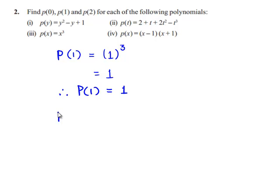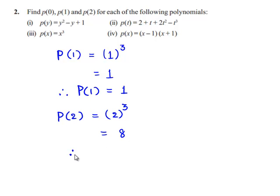Next, p of 2 is formed by substituting the value of 2 in the place of x. Therefore, p of 2 is equal to 2 cube. We know that 2 cubed is 8, therefore p of 2 is equal to 8.